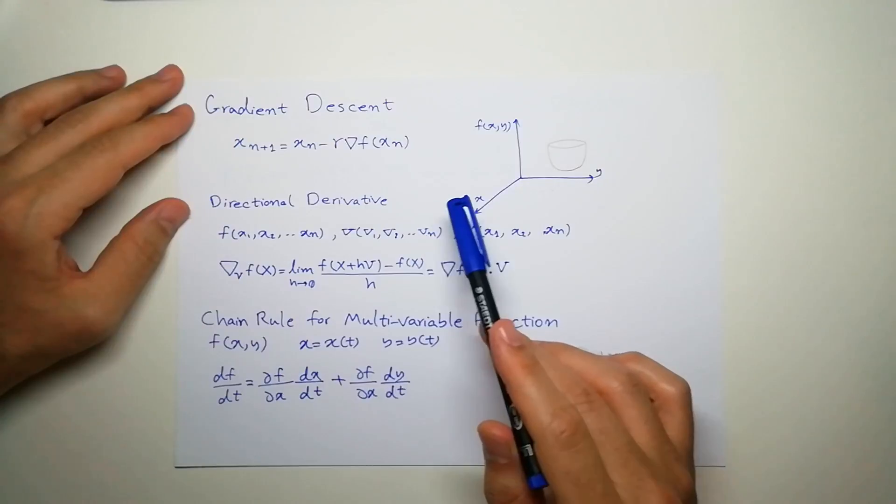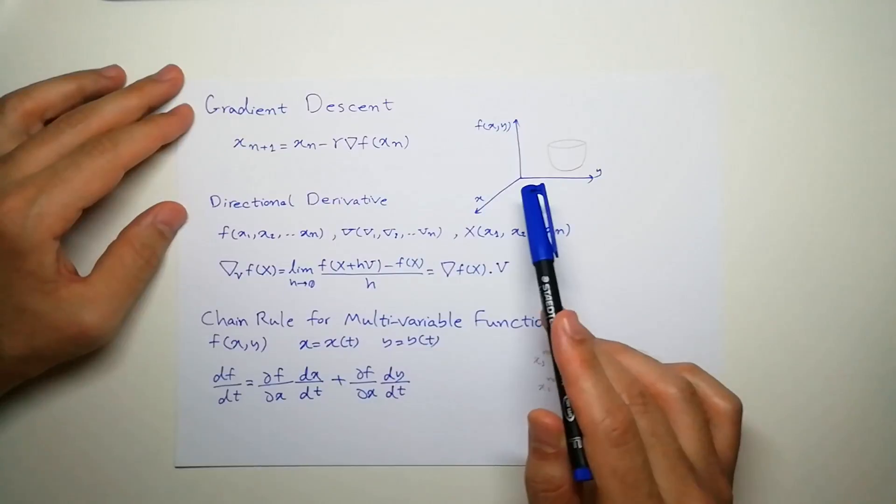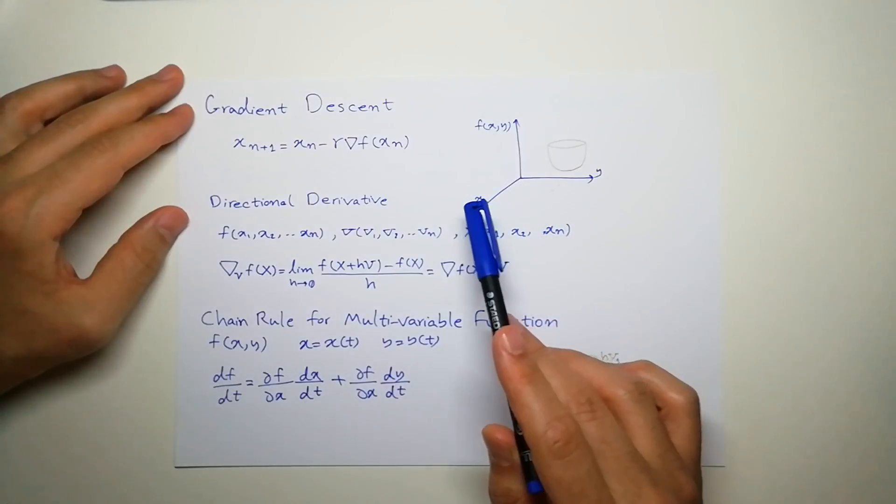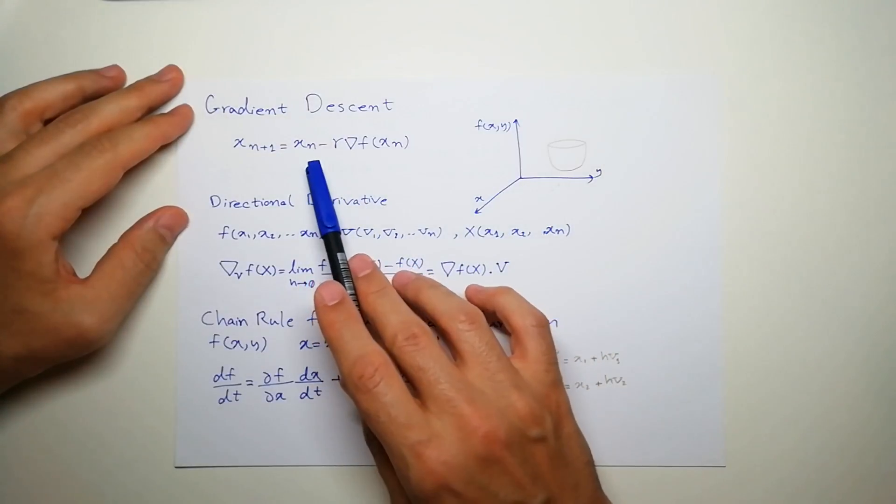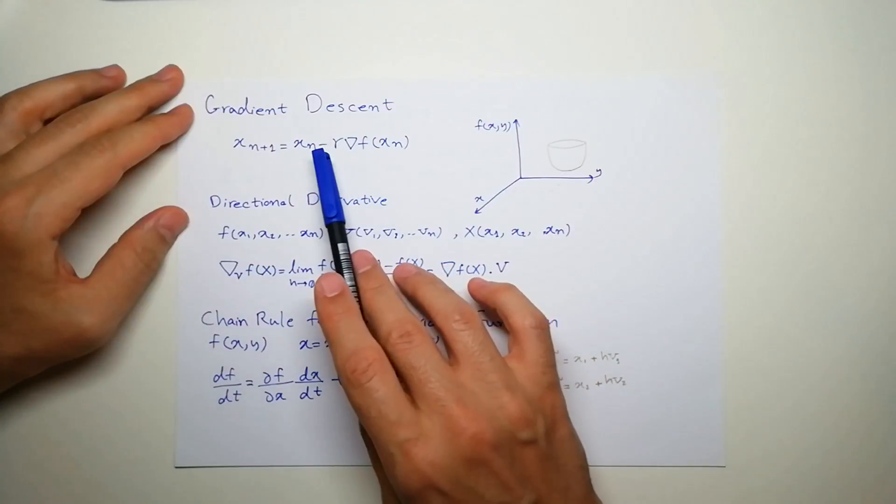Gradient descent is an iterative approach for finding a local minimum or maximum of a function. You start at a point, and then your next point is going to be the derivative of the function at that point minus that.